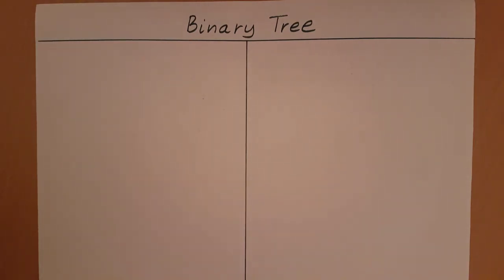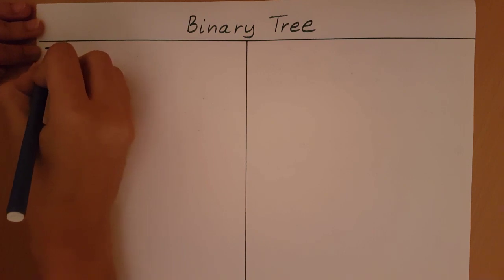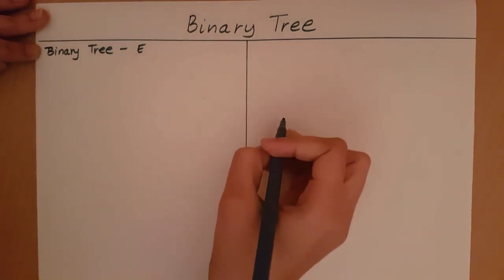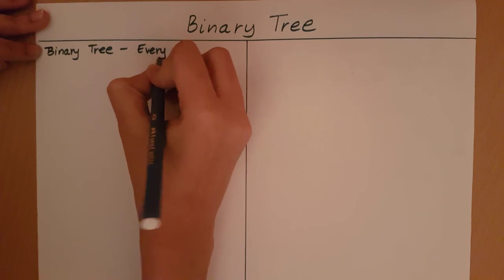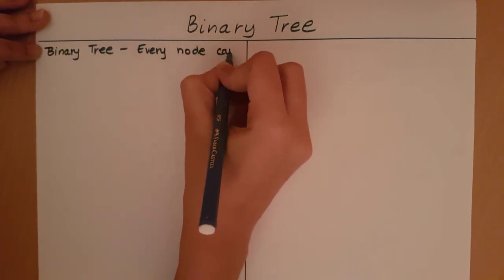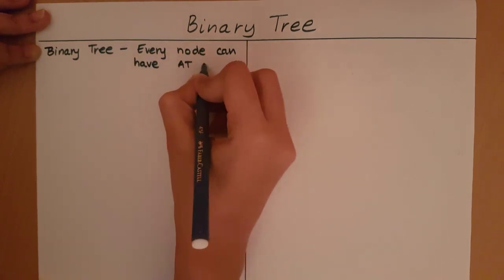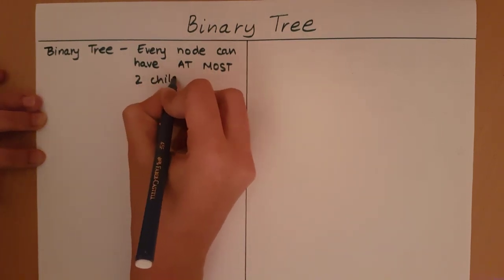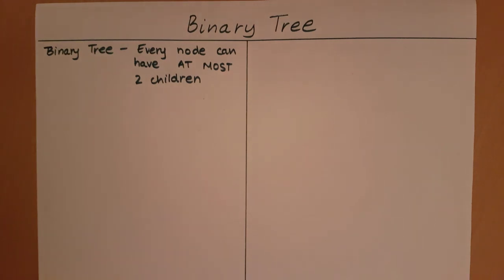A binary tree is a tree in which every node can have at most two children. The number of children a node can have can range from zero, one, or two — it cannot go above two. Let me give an example of this.